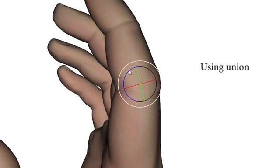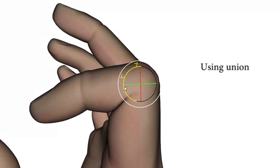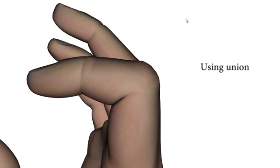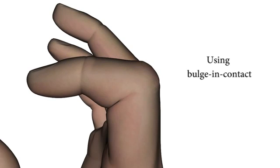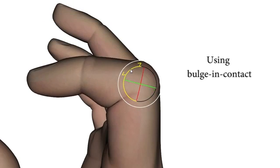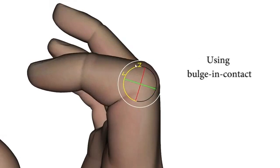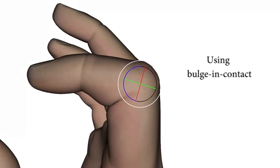Here again, the union operator provides a plausible result. A real finger joint generates a fold and contacts surrounded by organic bulges. This effect can be reproduced using the pre-defined gradient-based bulging contact operator.